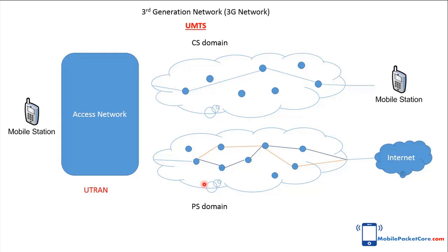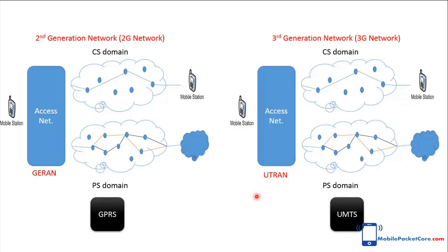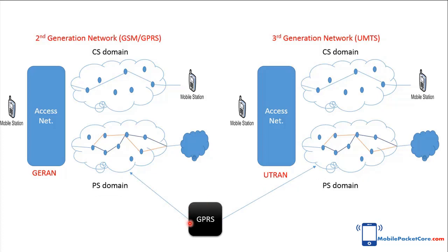The access network for the 3G network is the UTRAN, which stands for Universal Terrestrial Radio Access Network. Since GPRS afforded PS service to mobile networks, you may find it mentioned in two different ways. First, GPRS along with UMTS, where GPRS refers to the 2G network and UMTS refers to the 3G network. Second, GPRS alone, in which case GPRS refers to the PS service in both 2G and 3G networks, because the core network in UMTS is inherited from the GSM GPRS network.